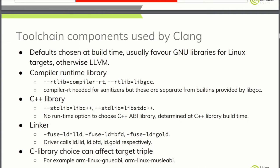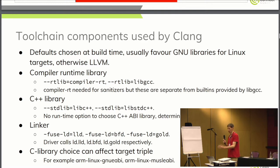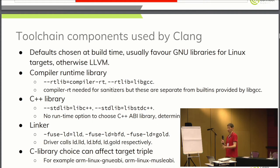There are various bits you can select between. When there's a GCC equivalent and you're compiling on Linux, Clang will already assume those are present. So by default, Clang on a Linux system will use libgcc and libstdc++ rather than LLVM's libc++. That will change on an Apple platform where the defaults are reversed.